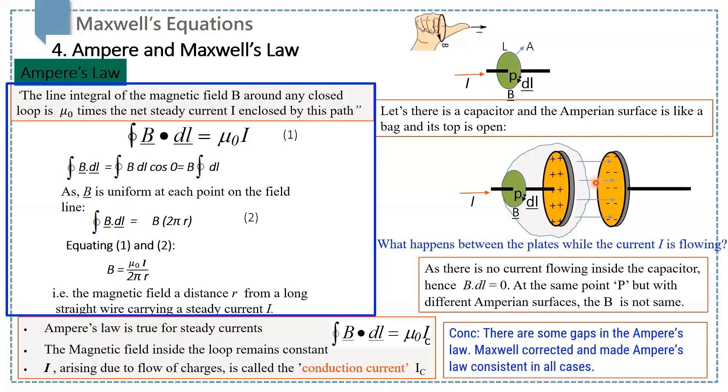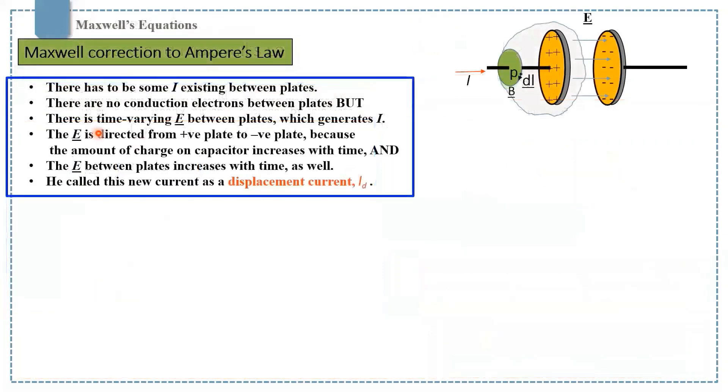He modified Ampere's law to include the time-varying electric field. He assumed there has to be some current existing between the plates. There are electrons flowing outside of the capacitor generating current and magnetic field, which he named conduction current. But there are no conduction of charges between the plates. He said that there is time-varying electric field between plates which generates the current, and this time-varying electric field is directed from positive plate to the negative plate because the amount of charge on capacitor increases with time. So the electric field between plates increases with time as well.